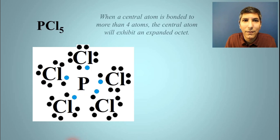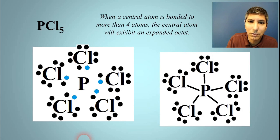But that's okay. Anytime you have a central atom, like phosphorus in this case, that's bonded to more than four atoms, that central atom is going to have to exhibit that expanded octet. There's no other way around it. So when you draw the final structure, this is what it's going to look like: the phosphorus that has five single bonds, one extending to each of those chlorine atoms.